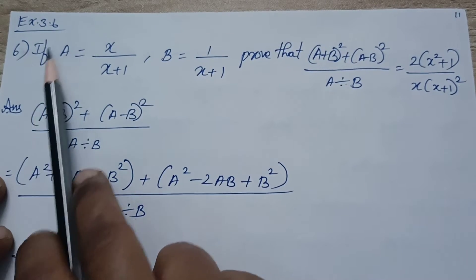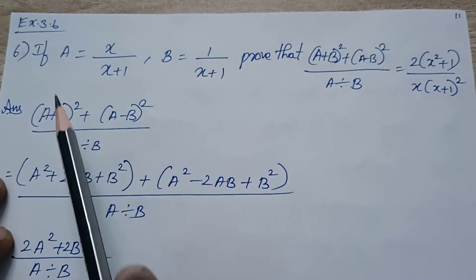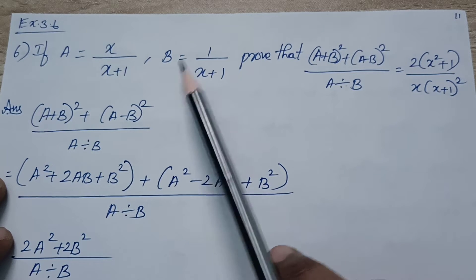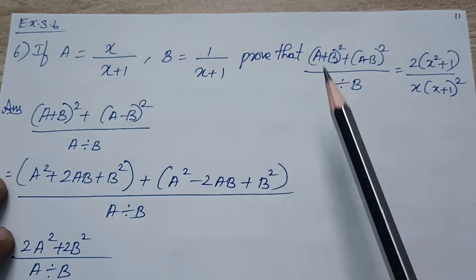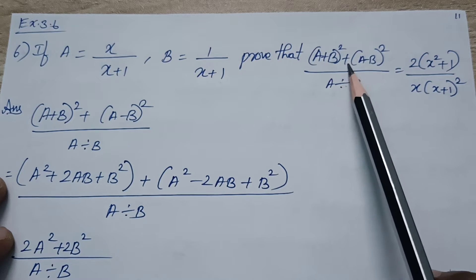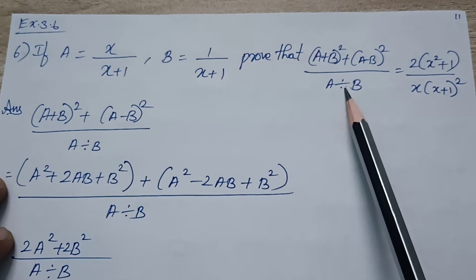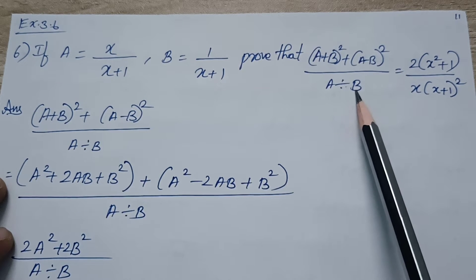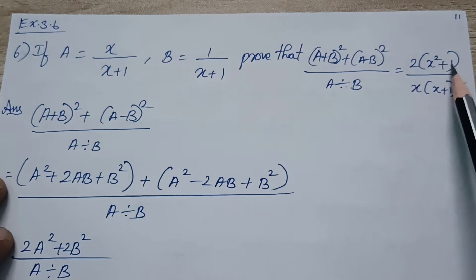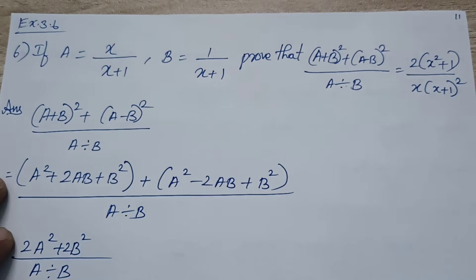Hi dear. X is 3.60 and X is 6th, the Sampakla. If A equals to X by X plus 1, B equals to 1 by X plus 1, prove that A plus B the whole square plus A minus B the whole square divided by A divided by B equals to 2 into X square plus 1 by X square into X plus 1 the whole square.